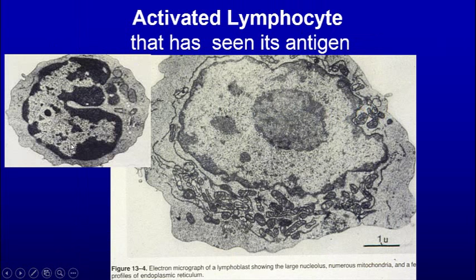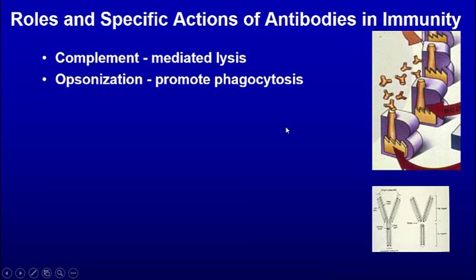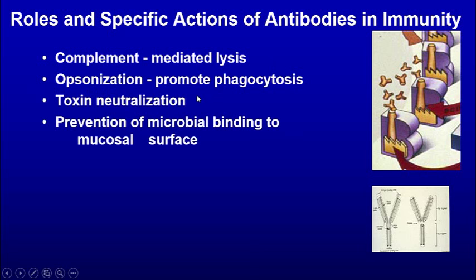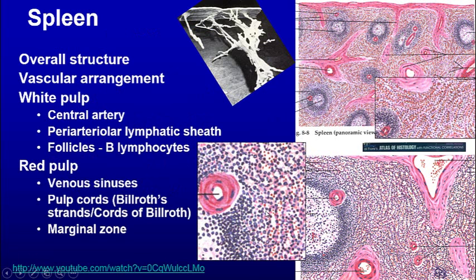The lymphocyte looks kind of sleeping — not active — until it sees its antigen. Then the DNA expands, it divides, it differentiates, and develops memory cells or suppressor cells. A plasma cell has a cartwheel-shaped nucleus, spherical nucleus, and lots of rough endoplasmic reticulum. The antibody is located in the rough endoplasmic reticulum and is not stored in granules because this is constitutive secretion. Antibodies fix complement, opsonize to make things more edible, neutralize toxins, prevent microbial binding to mucosa, neutralize viruses, and cause degranulation of mast cells.